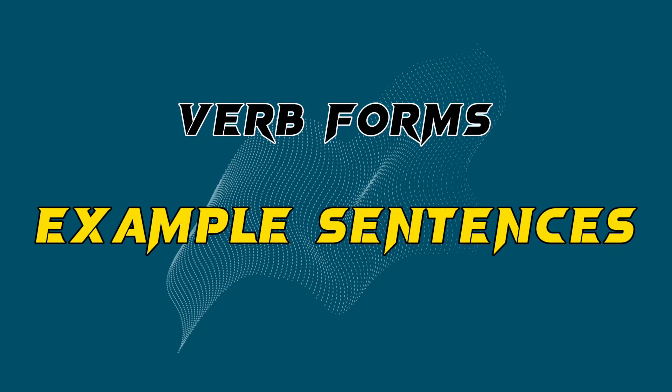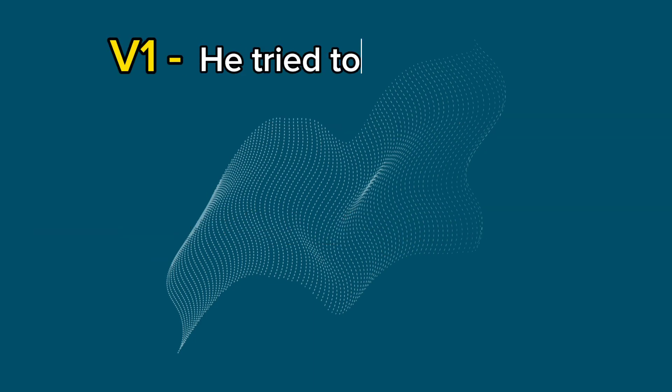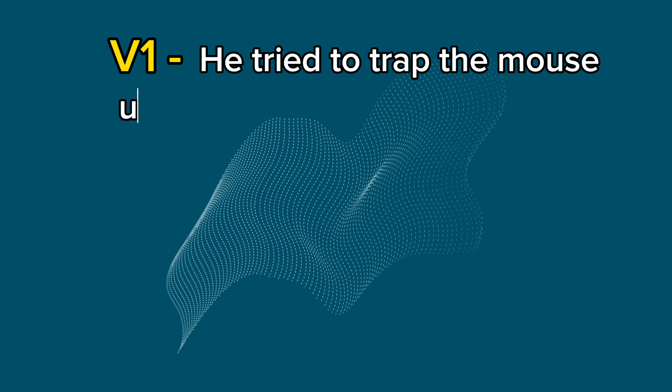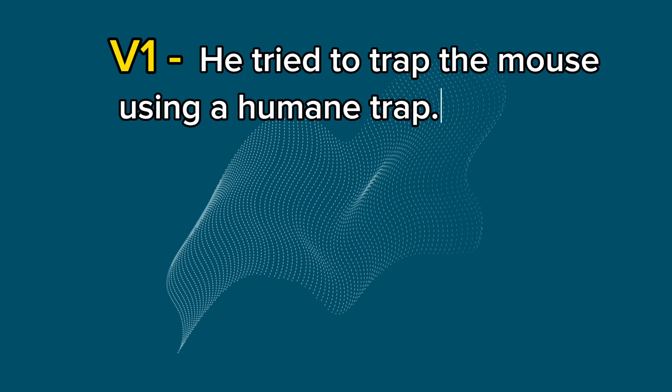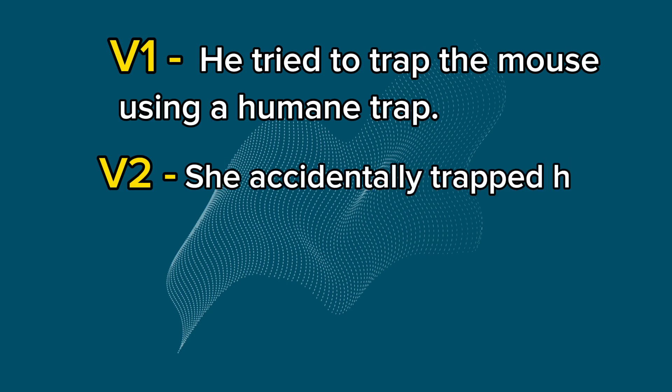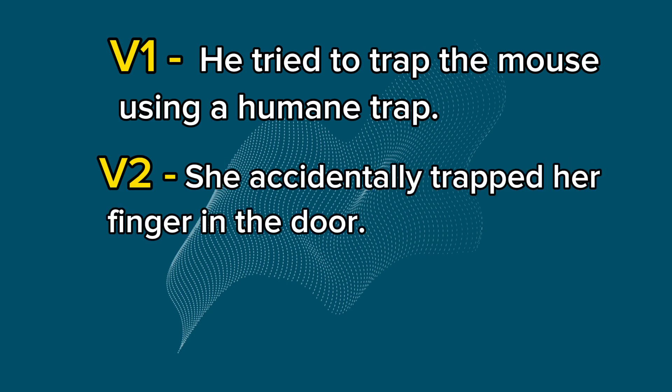Example sentences: V1 — He tried to trap the mouse using a humane trap. V2 — She accidentally trapped her finger in the door.